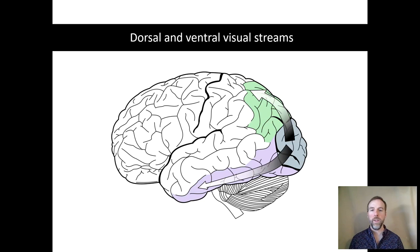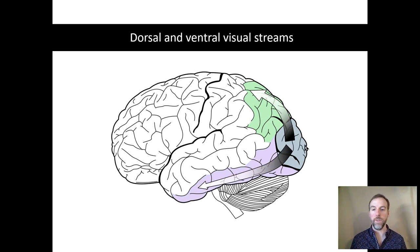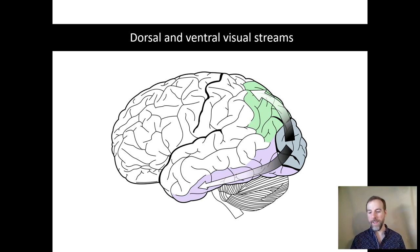Today we are going to look at the distinctions between the dorsal and ventral visual streams, shown here on this first slide, but we'll get more into the neuroanatomy of this as we go.